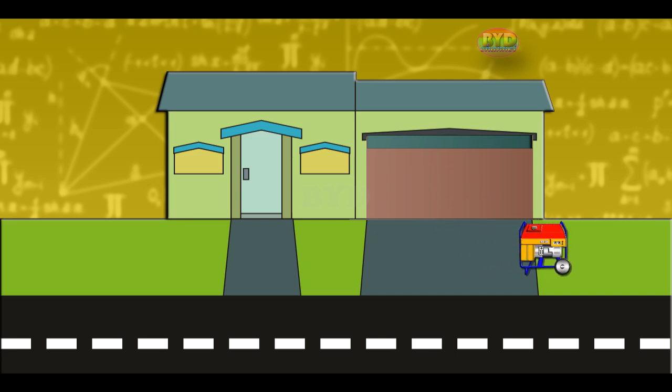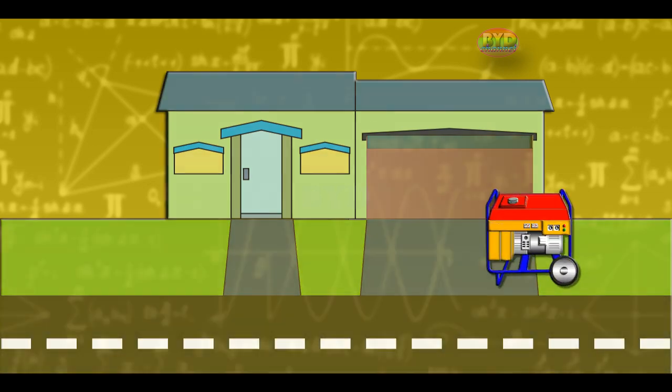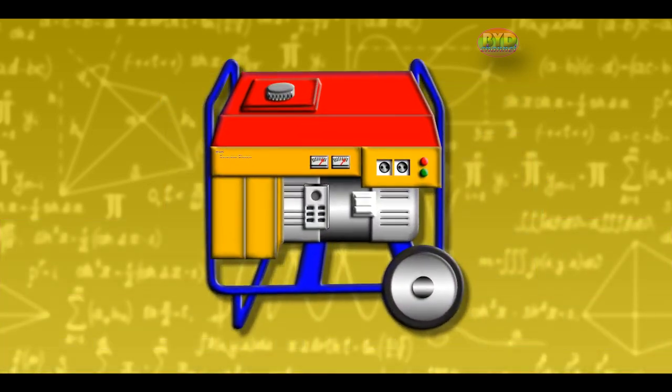Electric generator is a tool used to convert mechanical energy into electrical energy originally designed by physicist Nikola Tesla.